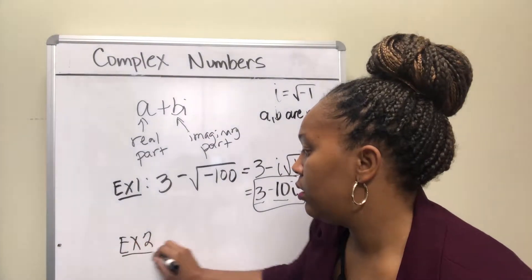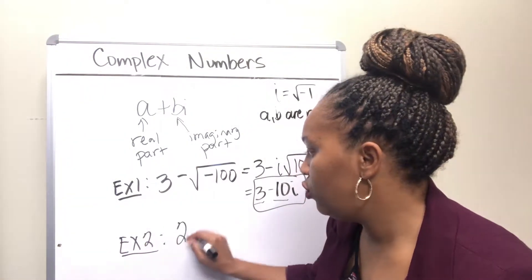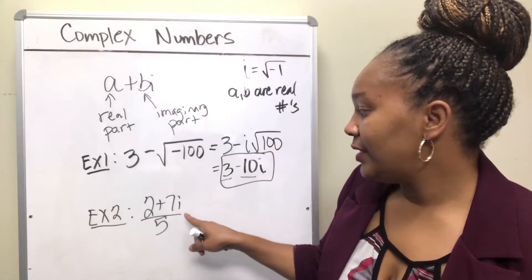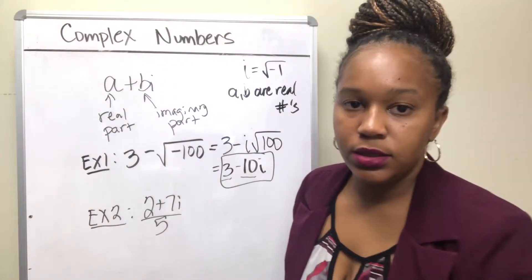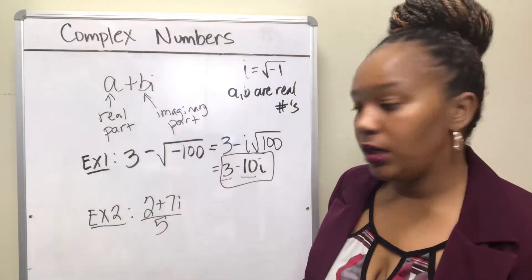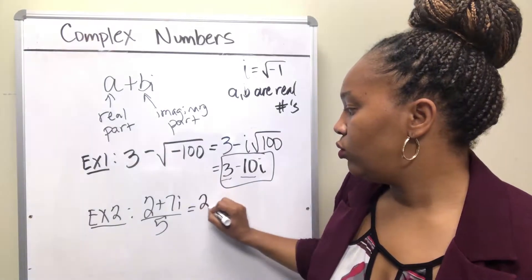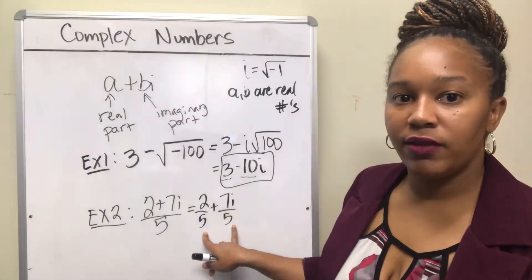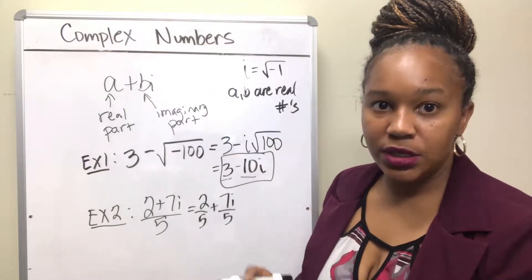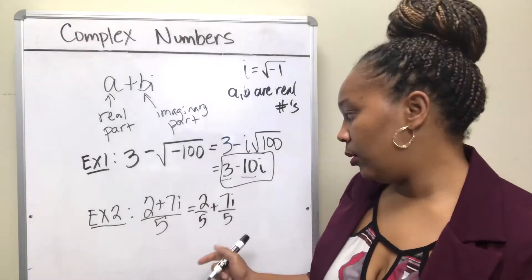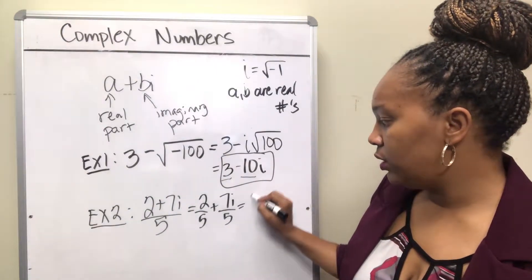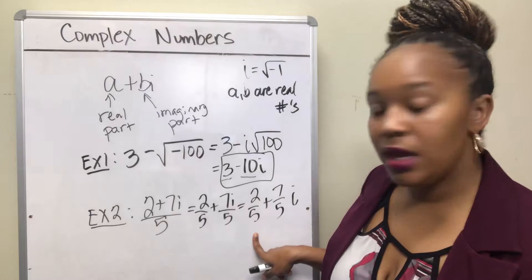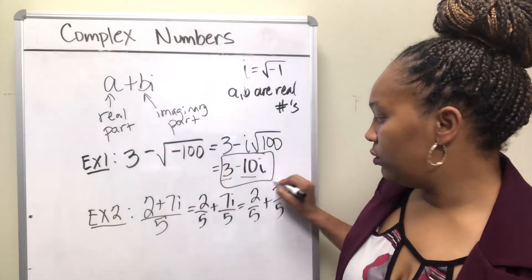Example two: write (2 + 7i) over 5 in complex form a plus bi. Since we already have the i, we just need to separate the fraction. This is equivalent to 2 over 5 plus 7i over 5, which we rewrite as two-fifths plus seven-fifths times i. So a is two-fifths and b is seven-fifths. That's the final answer.